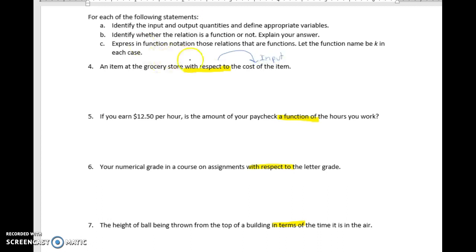If we're looking at number 5, we know that the input quantity is going to be the hours and the output quantity is going to be the amount of our paycheck. Now we want to write this using correct verbiage, starting with a reasonable letter.